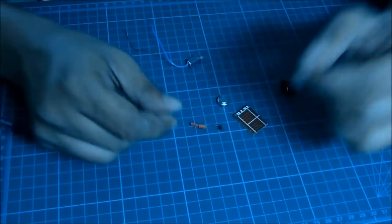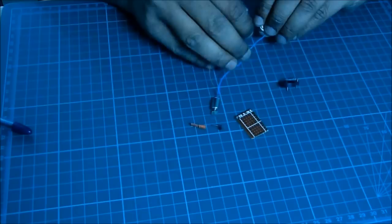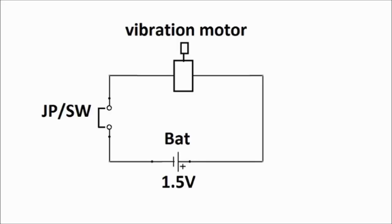If you apply 1.5 volt across this vibrator, it starts vibrating like this. Now we are going to connect this vibrator, the switch, and the battery in series.